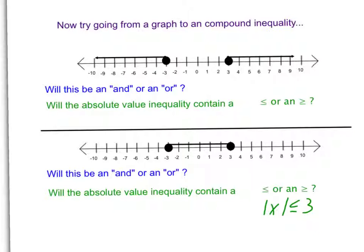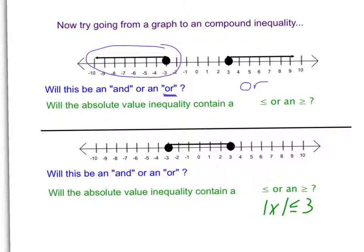Now let's try going from a graph. This is actually going to be a good review for how to write a compound inequality from a graph as well. The first thing you need to remember is: is it going to be an and or an or? Since these arrows are going in opposite directions, we know it's going to be an or. Then just write the inequality for each part. This part right here is going to be a less than or equal to because the circle is filled in, so x is less than or equal to negative 3. This is going to be a greater than or equal to because the circle is filled in and the arrow is going to the right, so x is greater than or equal to 3. The order of these individual parts could be reversed, as long as you have the word or in the middle.